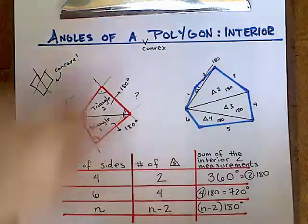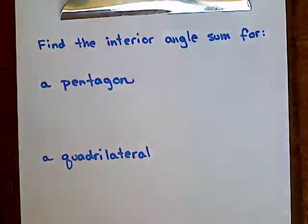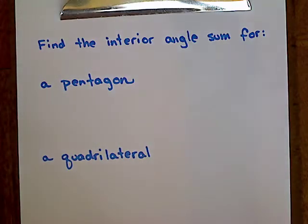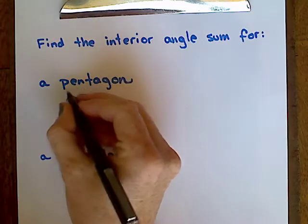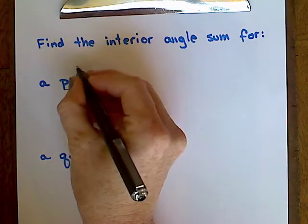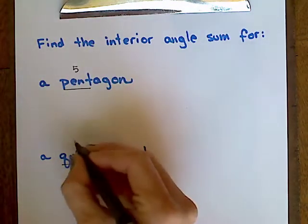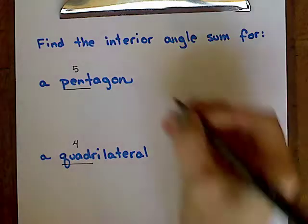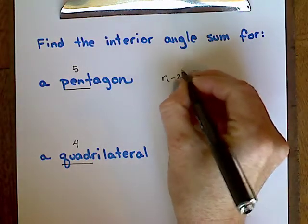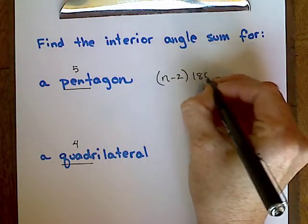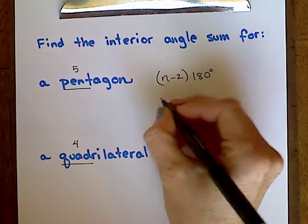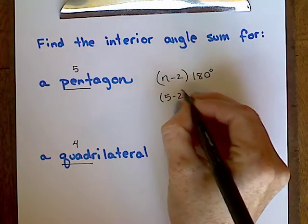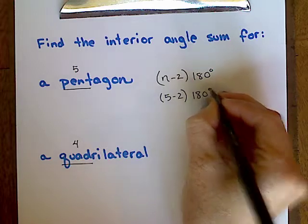Let's do a couple of examples. What is the sum of the interior angle measurements for a pentagon, which has five sides, or a quadrilateral, which has four sides? Using our equation — n minus 2, where n is the number of sides, times 180 — for a pentagon I can split the interior into three triangles. So five minus two is three.